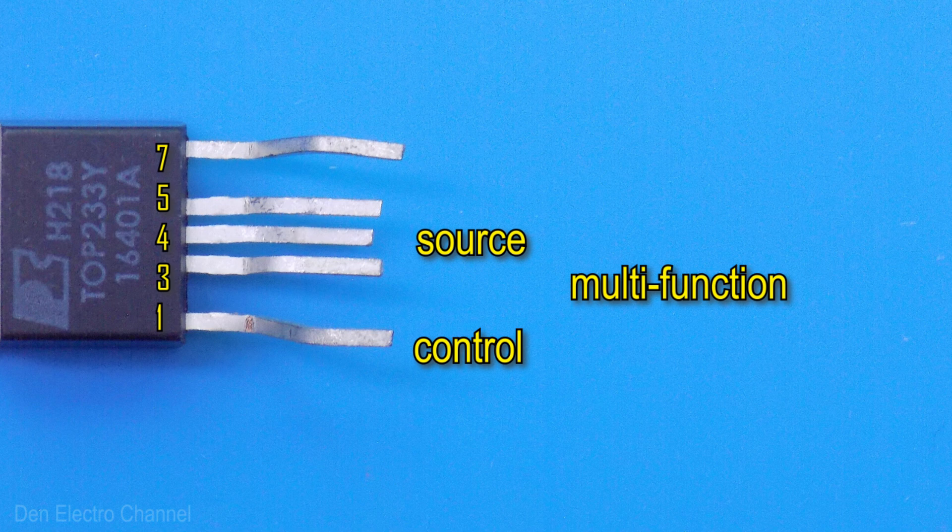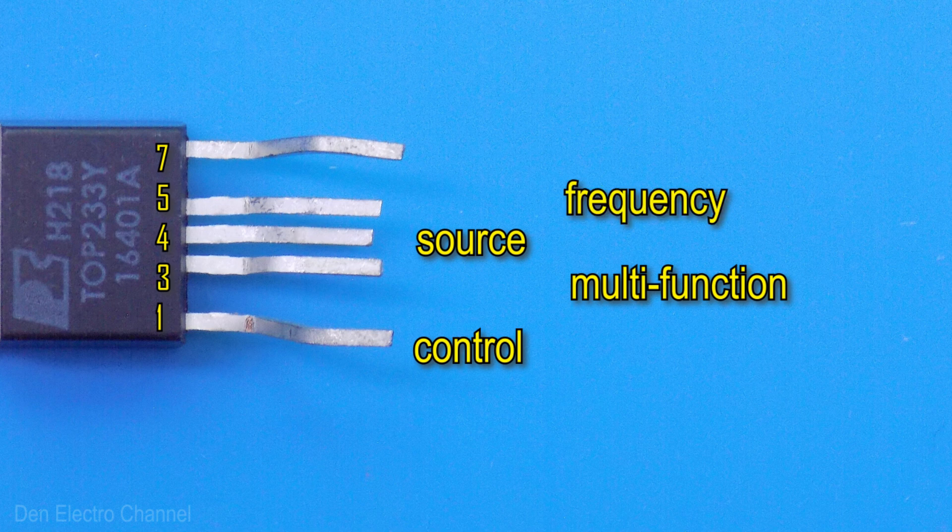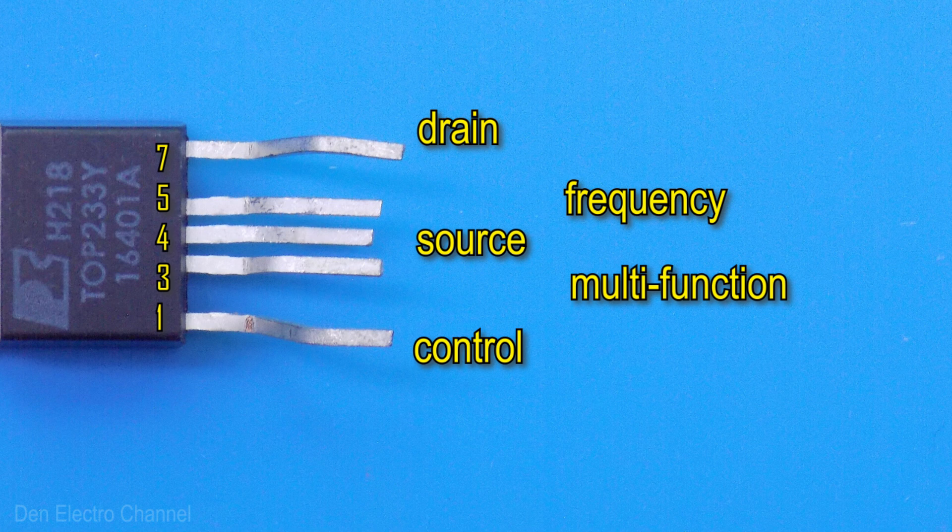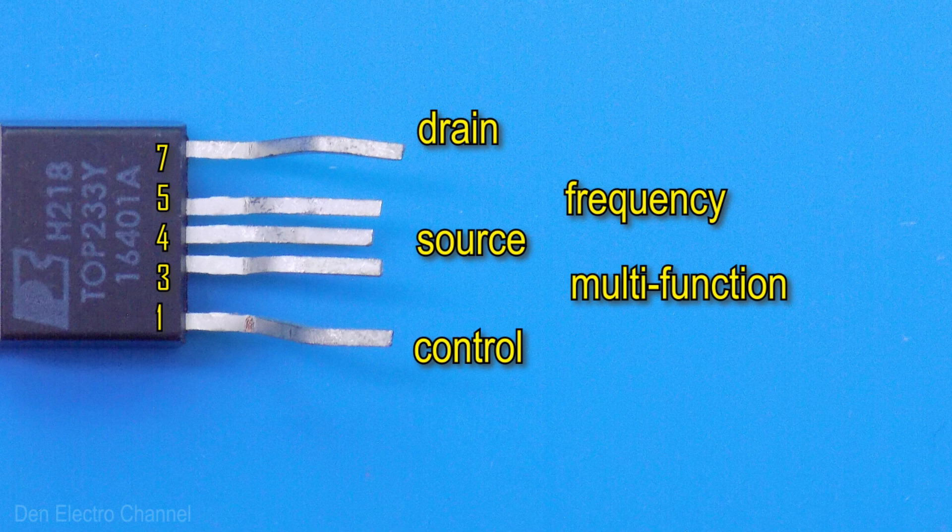The fifth pin is frequency. If you close it with the source pin, then the internal oscillator of the microcircuit will operate at a frequency of 132 kHz. And if you close it with the control pin, then the frequency will decrease by half, to 66 kHz. The seventh pin, drain, is the drain pin of the transistor. Voltage is supplied here from the primary winding of the transformer, and the microcircuit is powered from here.